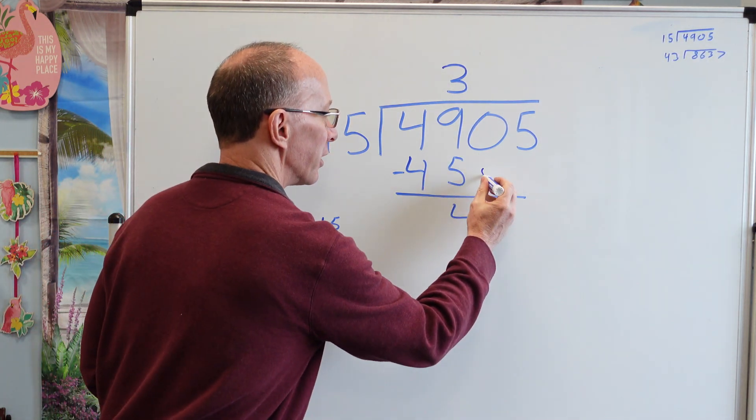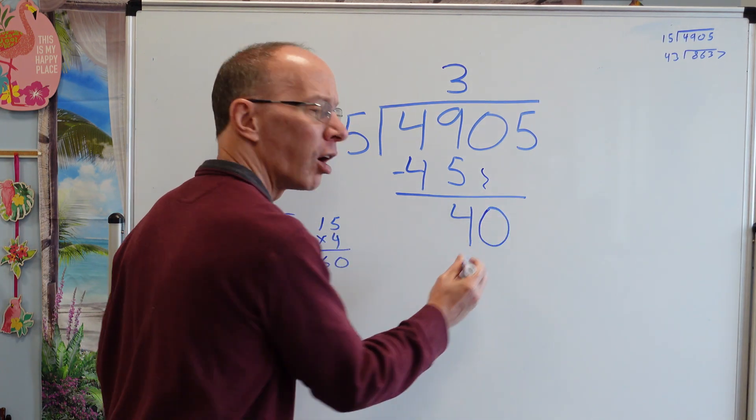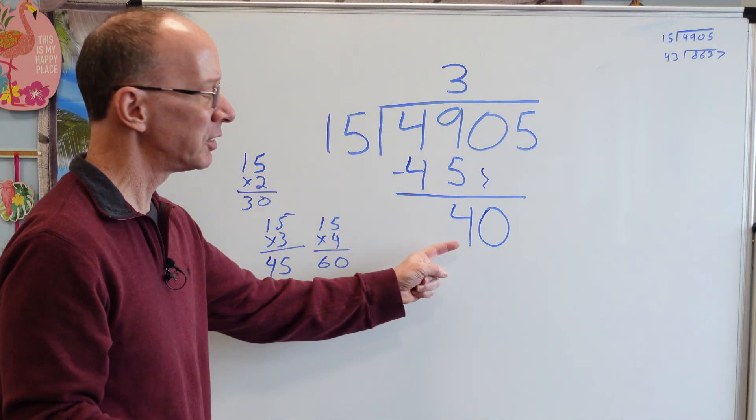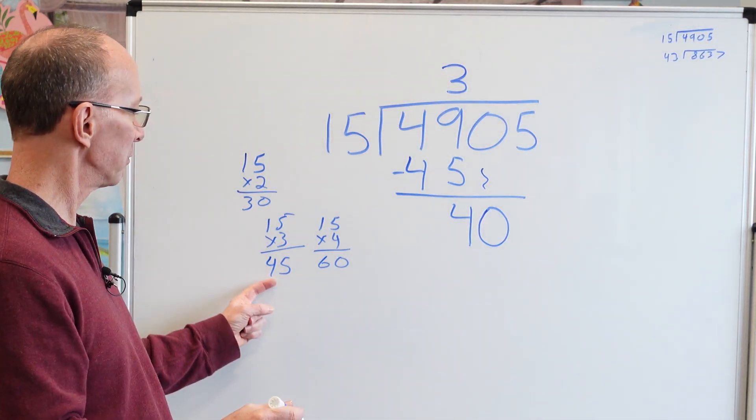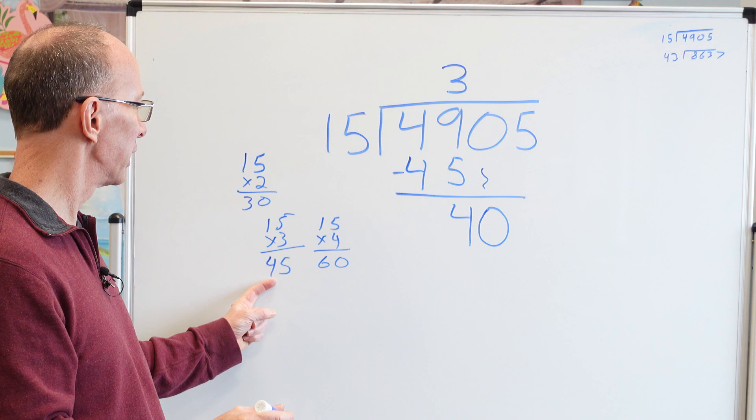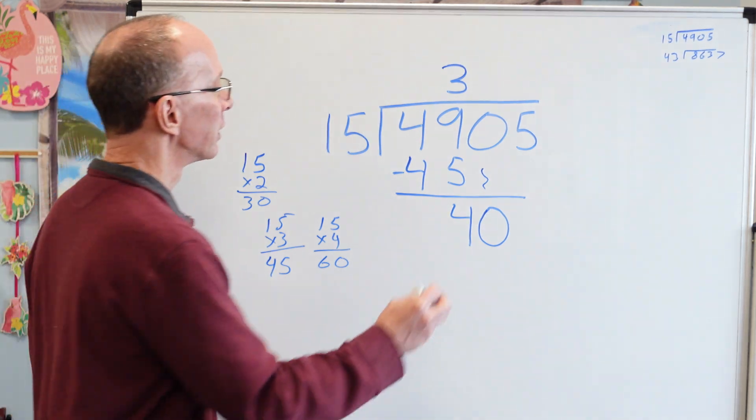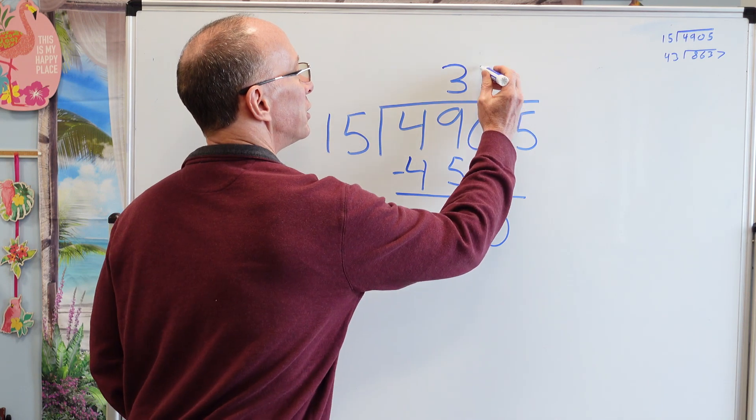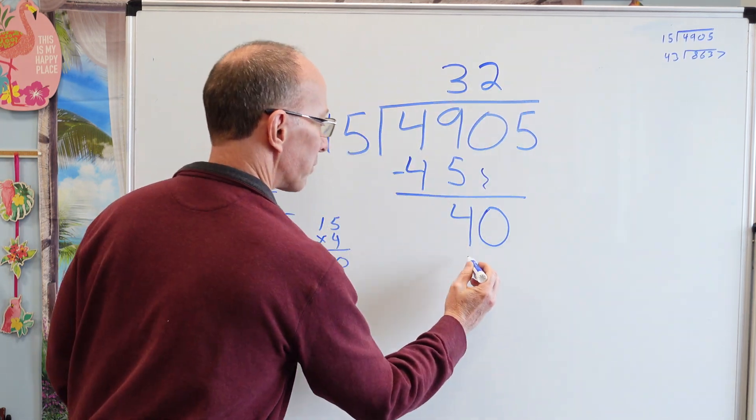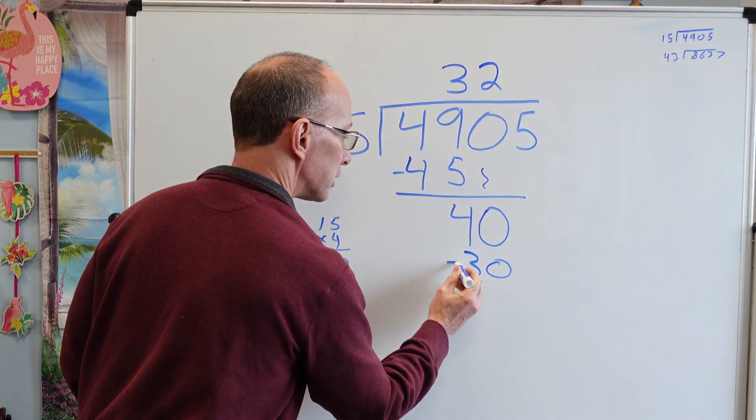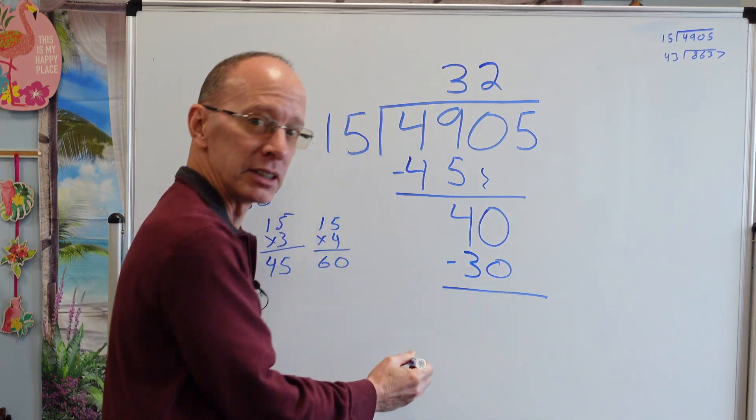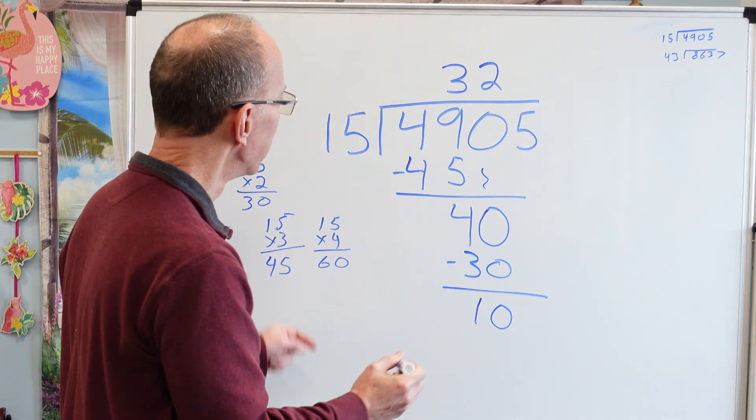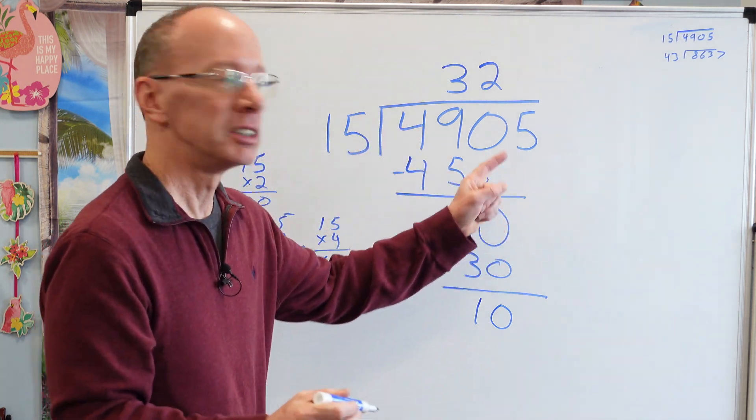Do a little beatbox right there. Always trying to have fun on this show. Again, how many times can I put 15 into 40? I'm doing division again. It's not 3 because 45 is too big. I'm going to have to stick with 2. Put a 2 right here. 2 times 15, 30. Subtract. 40 minus 30. 10. Bring that next number down.